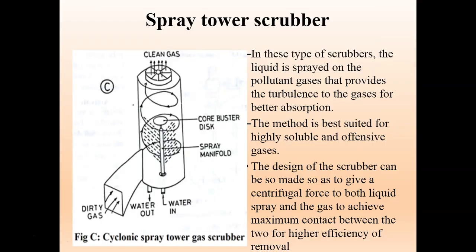Next is the spray tower scrubber. As the name suggests, water is sprayed. The polluted gas enters and there will be a jet of liquid passed through it. The polluted gas comes in contact with the liquid medium, a sludge is formed and taken out through an outlet, and the remaining clean air exits as clean gas. This method is best suited for highly soluble and offensive gases. The scrubber design can be made to give centrifugal force to both the liquid spray and the gas to achieve maximum contact between the two for higher removal efficiency.